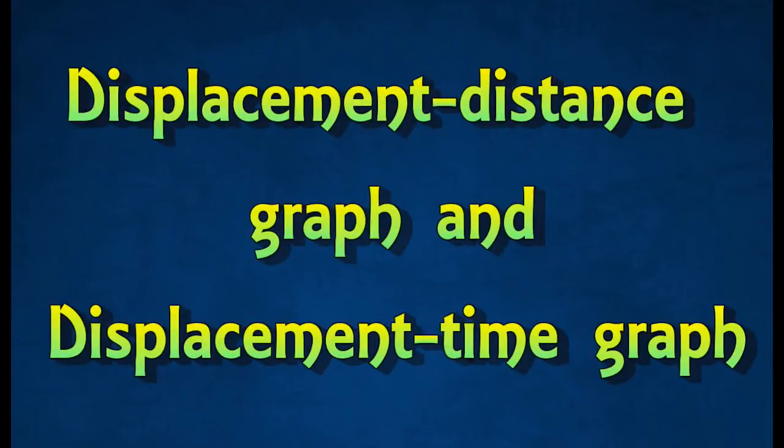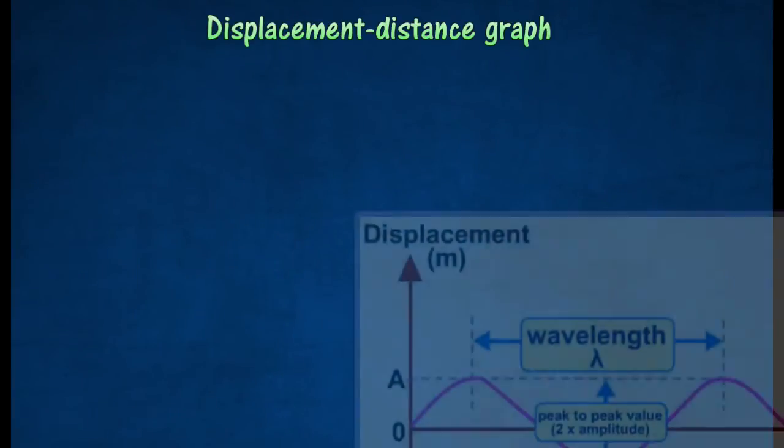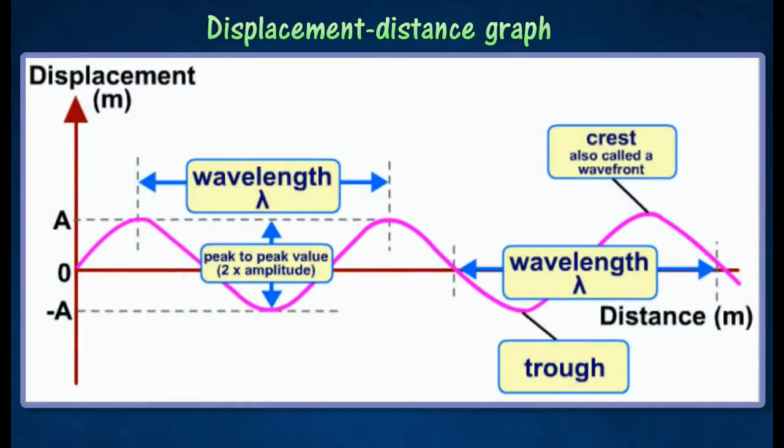Displacement Distance Graph and Displacement Time Graph. Displacement Distance Graph can be used to describe the displacement of particles from their mean or stationary position in a medium.